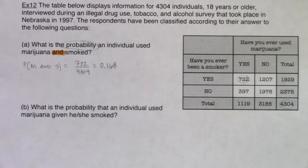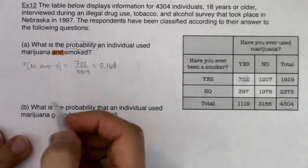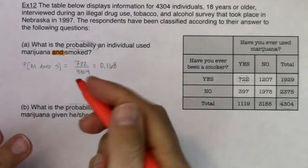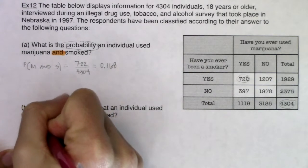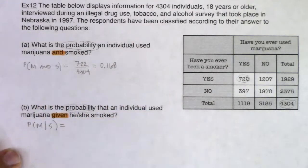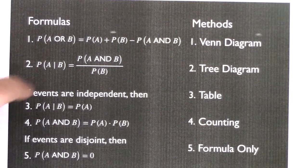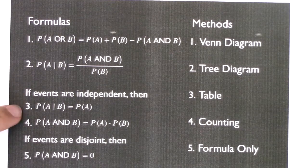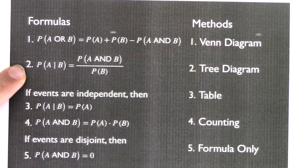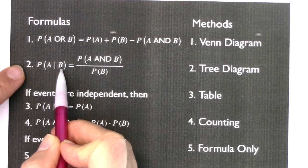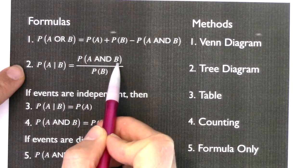We're through Part A. Part B says: what is the probability that an individual used marijuana given he or she smoked? I'm seeing two buzzwords — probability and 'given.' That tells me this is conditional probability. So I'll write this as: probability of marijuana given smoked. I'm going to use formula two, not formula three, because I don't know that these events are independent — and I would guess there's some relationship between smoking cigarettes and using marijuana.